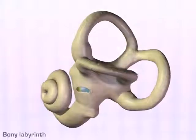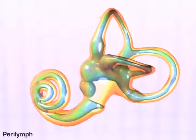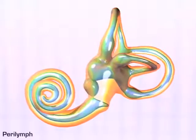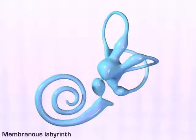The volume of the bony labyrinth is filled with a fluid called perilymph, which suspends the membranous labyrinth. This membranous labyrinth contains the fluid endolymph.